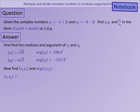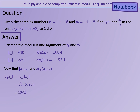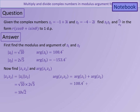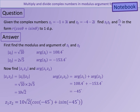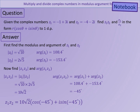Now that we've got the individual moduli and the individual arguments, we can use the rules to work out the modulus and argument of the product and the quotient. The modulus of Z1·Z2 is just the product of the two moduli, so it's root 10 times 2 root 5, giving a modulus of 10 root 2. The argument of that product is the sum of the arguments of Z1 and Z2. When we add those together, we get minus 45. So Z1·Z2 has a modulus of 10 root 2 and an argument of minus 45.